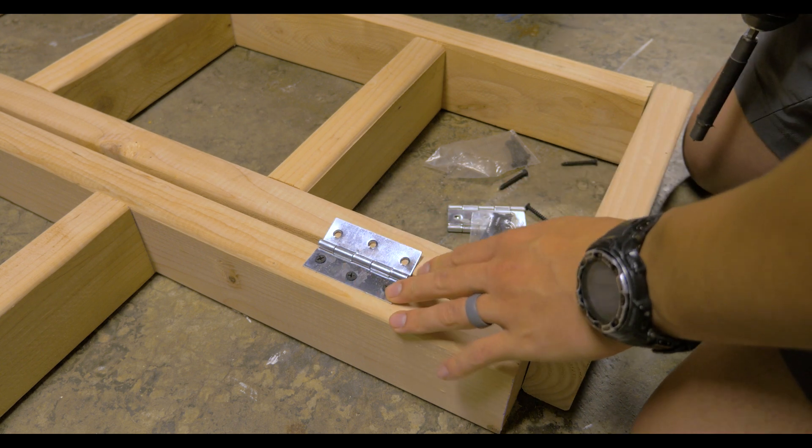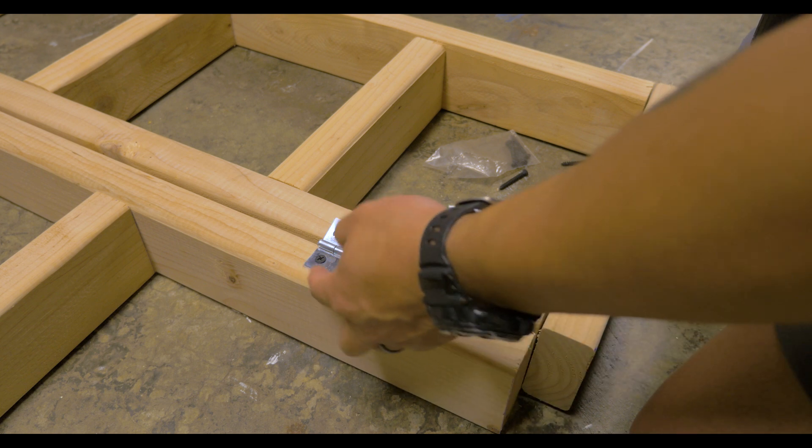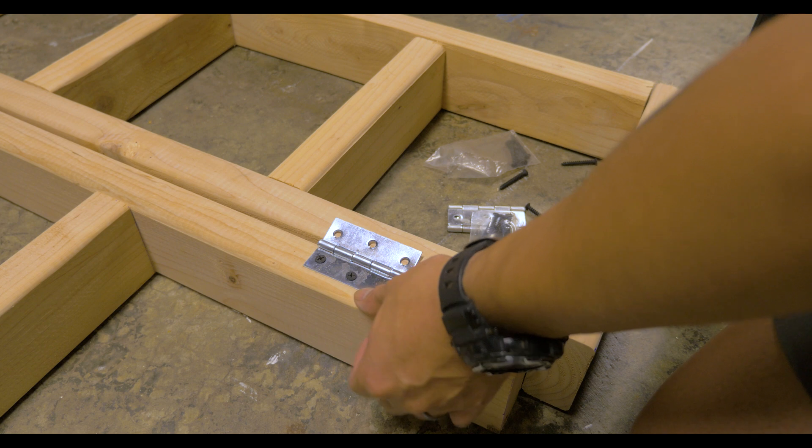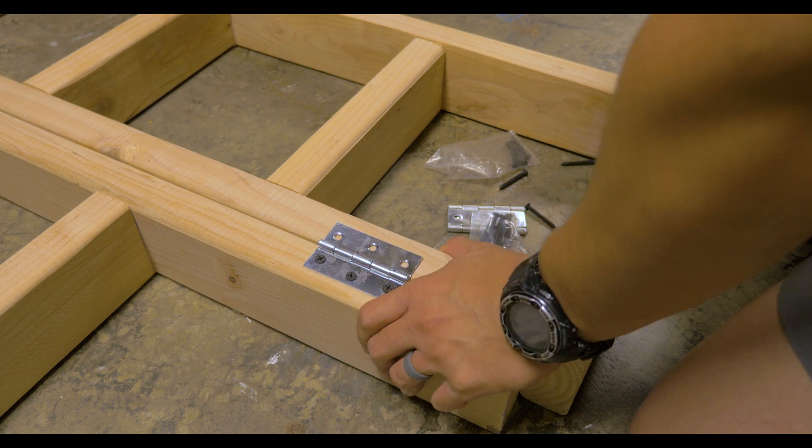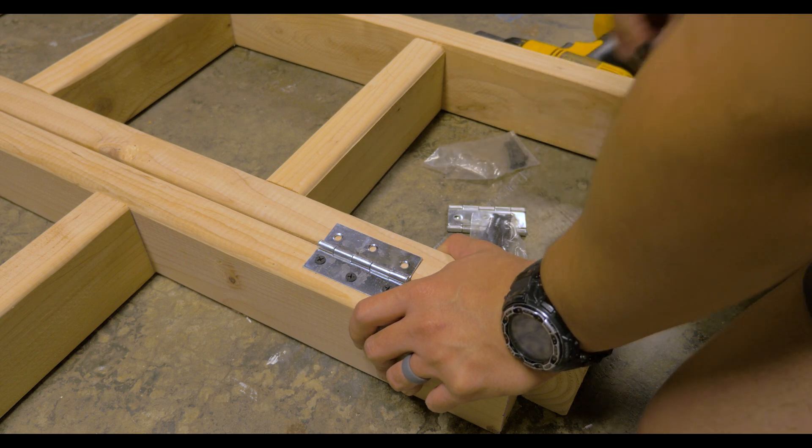So, if you wanted to get super fancy, what we could have done is taken a marker, or a scribe, and then mark the outside, then take a chisel, and then take a little bit of material out, so that this lays flat. But, you know, that's some other person's game. We're going to be shooting guns, so I don't think we're going to get that fancy.